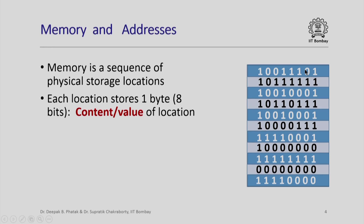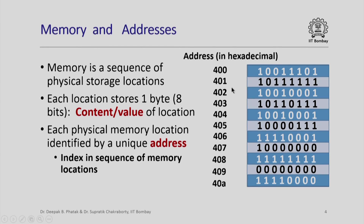Let us quickly look at our view of memory and addresses of locations in memory. Memory is a sequence of physical storage locations and each location stores exactly one byte or eight bits of information, which are also called the content or value of that location. Each physical memory location also has a unique address by which it is identified — this is like the index of that memory location in the entire sequence. For example, this memory location has address 40A in hexadecimal, and 11110000 is the content of this memory location.